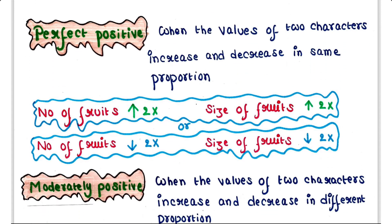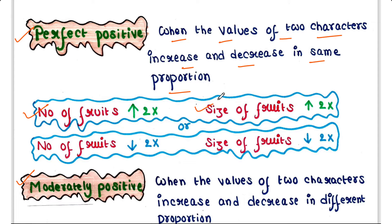Positive correlation could be of two types: perfect positive and moderately positive. Perfect positive correlation is when the values of two characters increase and decrease in the same proportion. In our case, suppose number of fruits as well as size of fruits both are increased equally, say two times, or else number of fruits as well as size of fruits both are decreased equally, say two times.